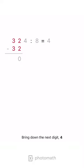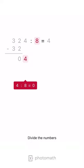Bring down the next digit, 4. Divide the numbers. Write the result, 0, in the answer line.